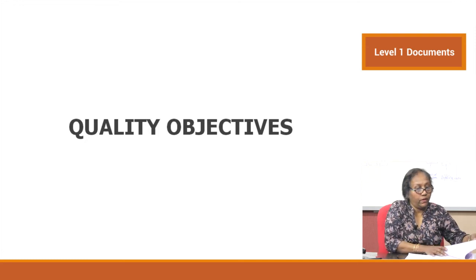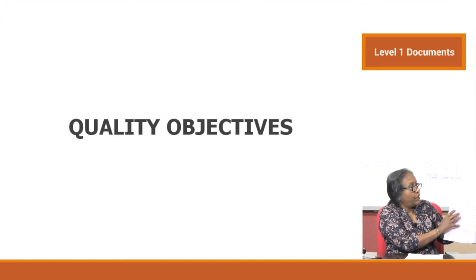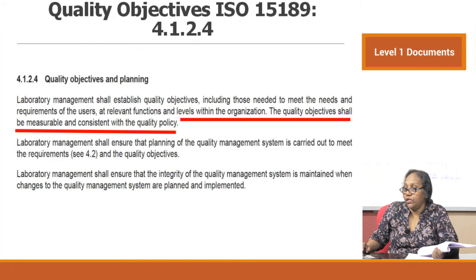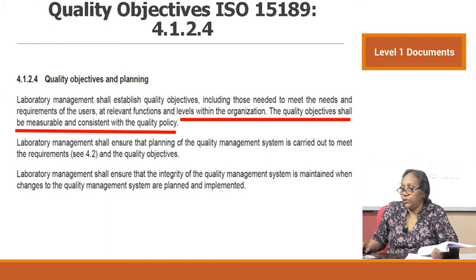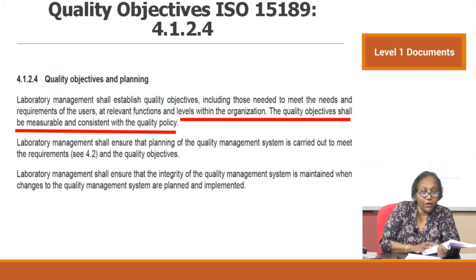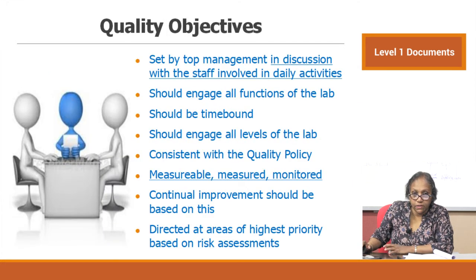We will now move on to the next aspect of apex documentation: quality objectives. Quality objectives can be found under clause 4.1.2.4 — quality objectives and planning. This clause states: laboratory management shall establish quality objectives, including those needed to meet the needs and requirements of users, at relevant functions and levels within the organization. The quality objectives shall be measurable and consistent with the quality policy.